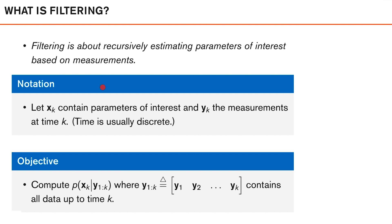To help us discuss the problem, we need to introduce some notation. Throughout the course, we will let xk, indexed by some time index k, be a vector that contains the parameters of interest, and yk contain the measurements at time k. As sensors tend to deliver data at discrete times with a fixed sample interval, time index k typically refers to one such interval and is a discrete time index. Using this notation, the filtering objective is to compute the posterior density of our state xk using y_{1:k}, a vector containing all the data up to time k. If we can compute this, we can compute an MMSE estimate or the MAP estimate of xk using this posterior density.